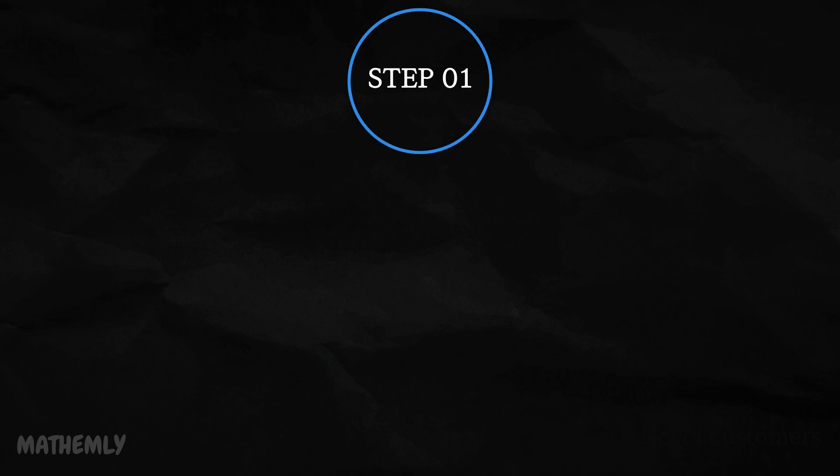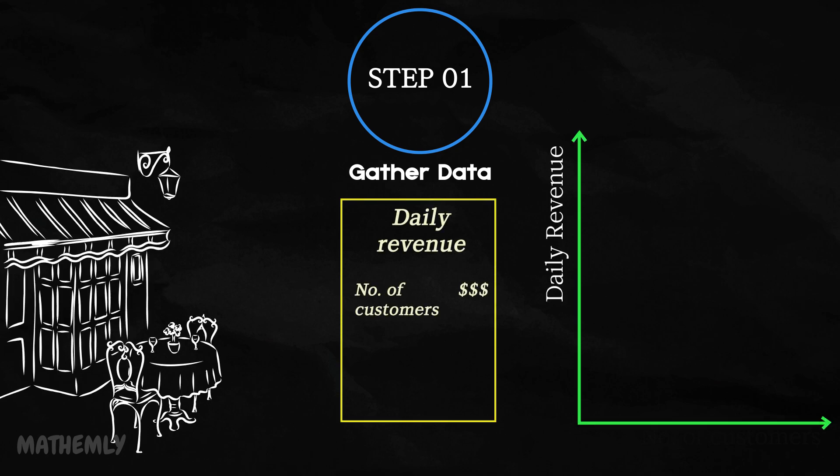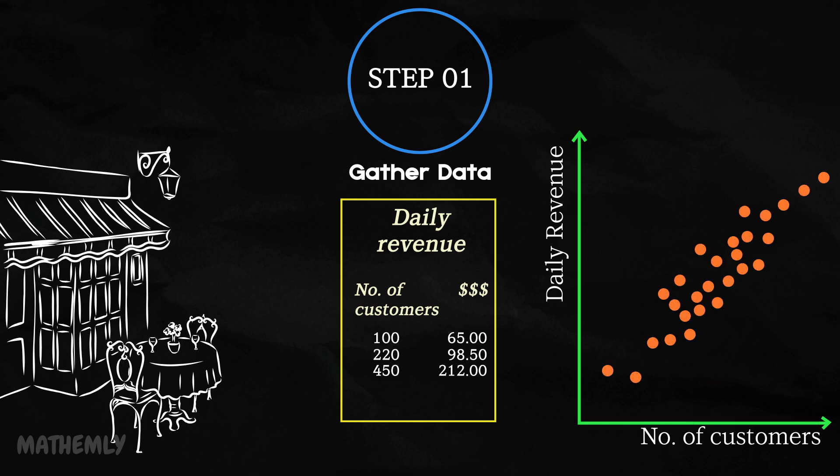Step 1, Gather data. Referring back to our cafe example, where you want to predict daily revenue based on the number of customers, this step involves collecting data. You would record the number of customers visiting your cafe each day and the corresponding revenue. This data helps establish the relationship between the two variables. Remember, the more accurate and extensive your data, the better your predictions will be.